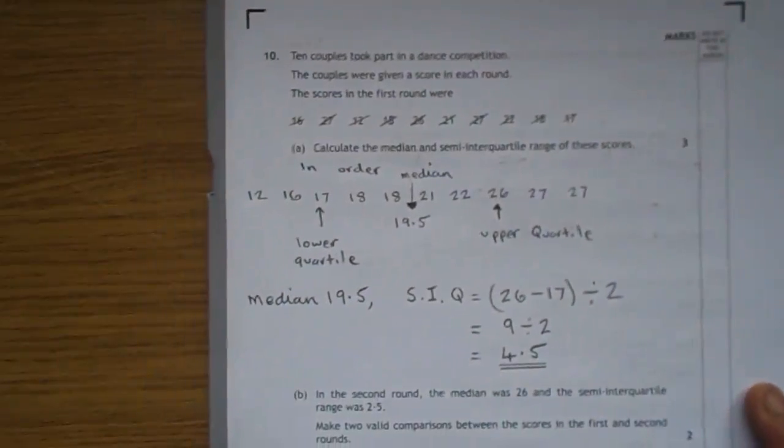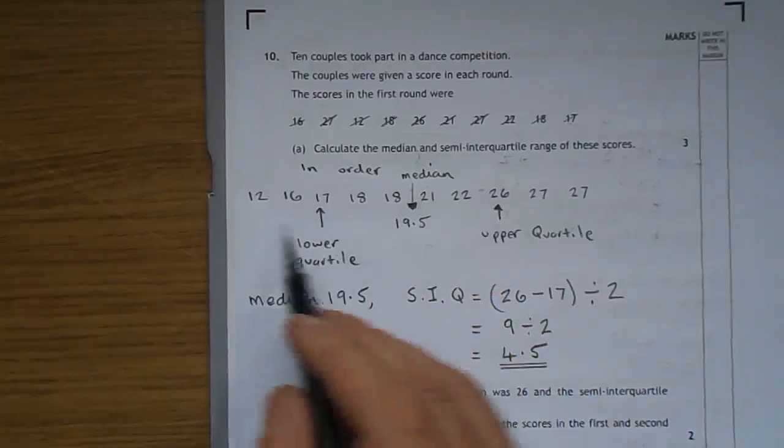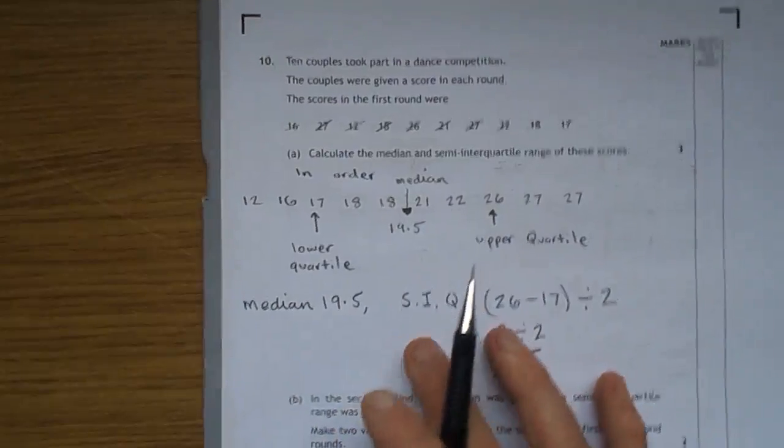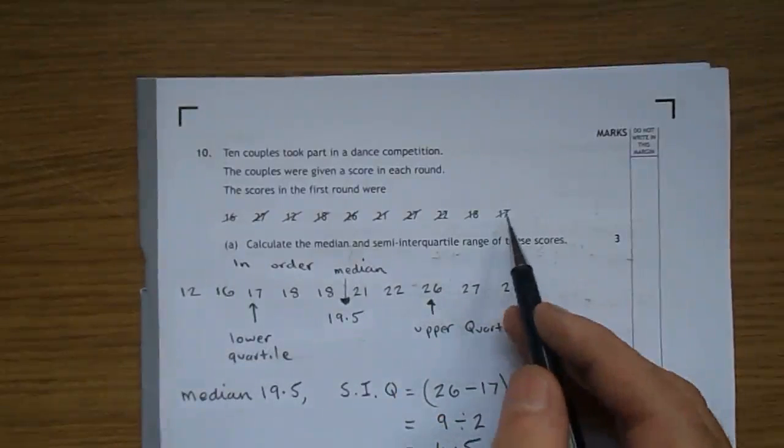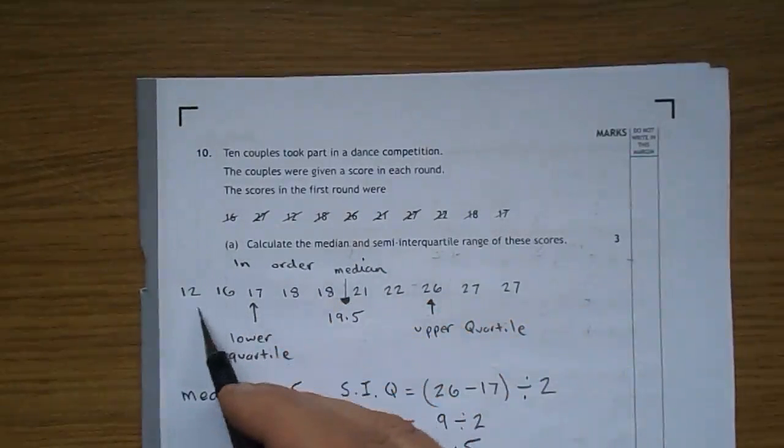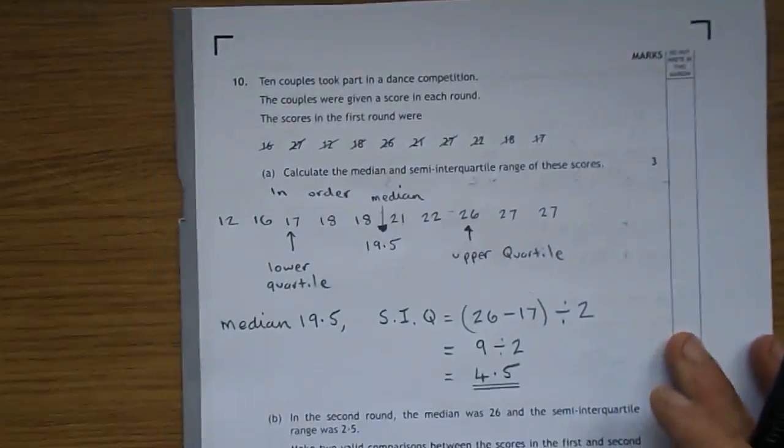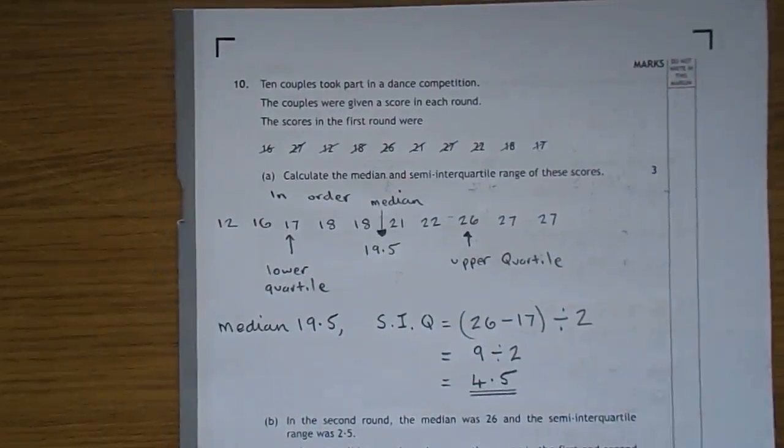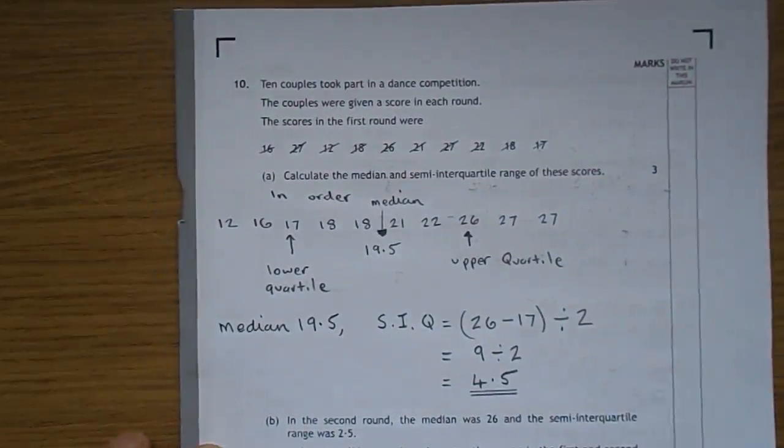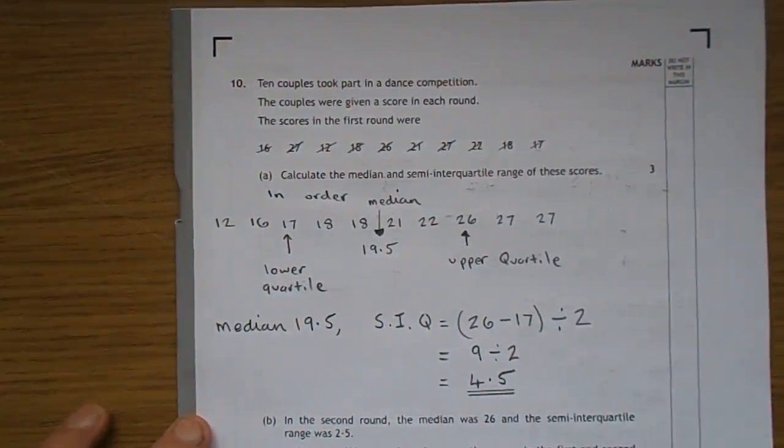First thing we need to do is put them in order. As you can see, I've done exactly what you probably did, scoring things out as you put them in order. So in order they go: 12, 16, 17, 18, 18, 21, 22, 26, 27, and 27.